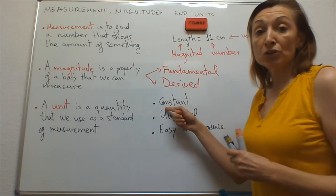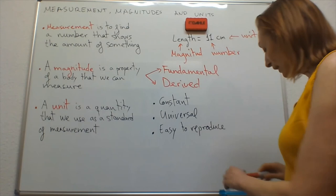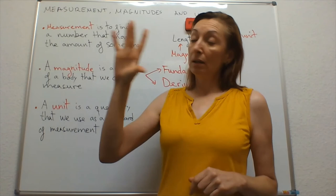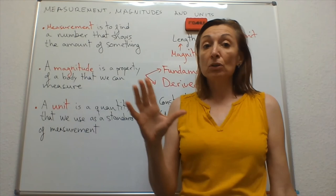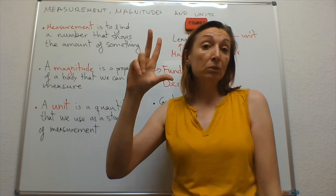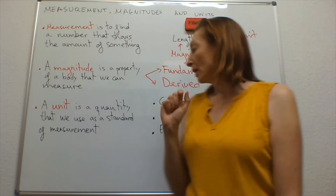A unit must be constant. It must have always the same value. For example, I cannot use the palm. This is a palm. I cannot use the palm as a unit because different people have different values of palm. So, it is not a constant unit. We cannot use this as a unit.